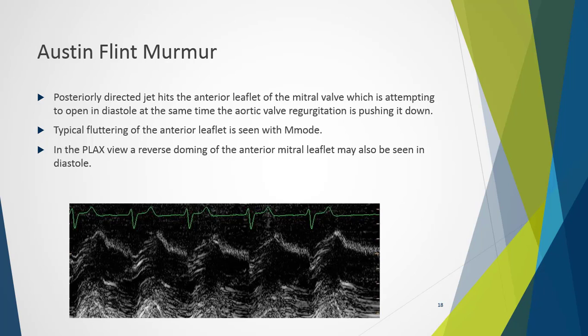Right coronary cusp prolapse and bicuspid valves often have eccentric jets that create an Austin Flint murmur. The posteriorly directed jet hits the anterior leaflet of the mitral valve, which is trying to open in diastole to allow ventricular filling, while at the same time the aortic regurgitation is pushing it down. Typical fluttering of the anterior leaflet is seen on M-mode. In the parasternal long axis view, reverse doming of the anterior leaflet may actually be seen in diastole.